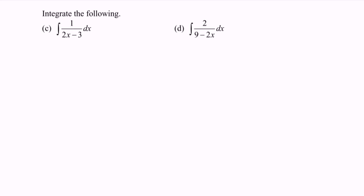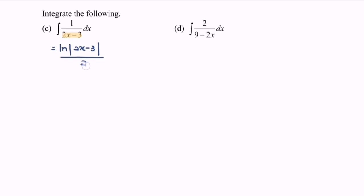Here we have situation c. If we integrate 1 over 2x minus 3, we will have ln|2x minus 3|. Do remember to differentiate the function, and we will have 2. So meaning that we divide by 2, plus c.